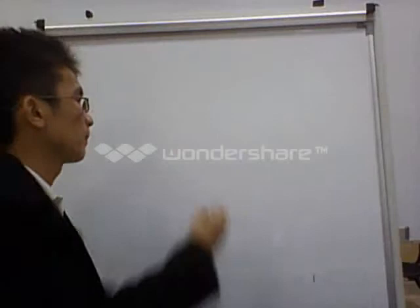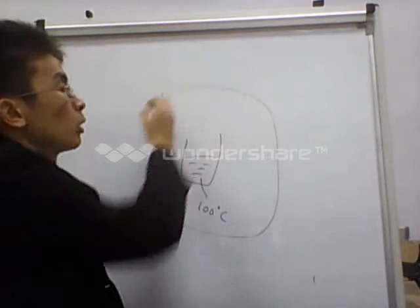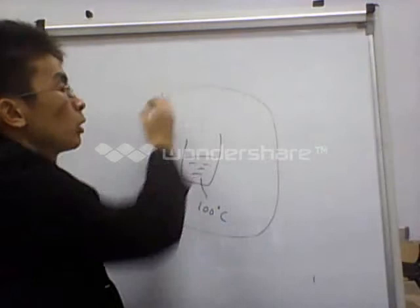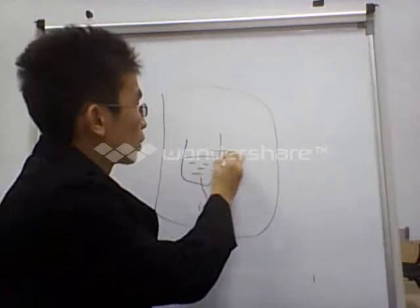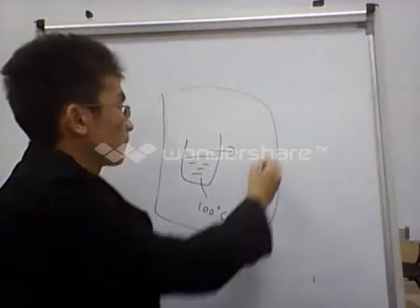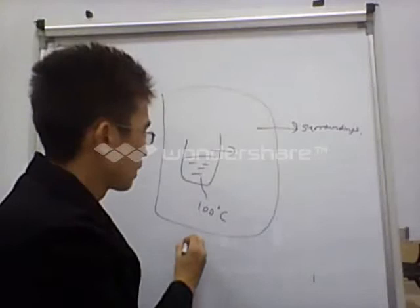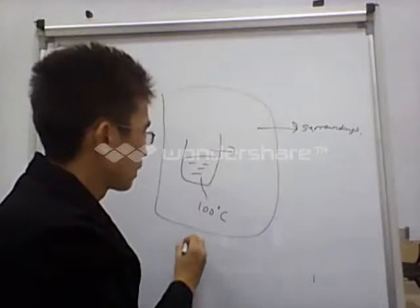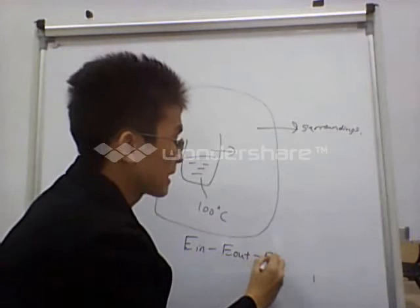Let me give you some examples to refresh your mind. You are given a hot coffee which is 100 degrees Celsius in a cooler room, and the energy lost by the hot coffee to the surrounding is actually equal to the energy absorbed by the surroundings. So the energy is conserved because E_in minus E_out equals E_system. So the first law of thermodynamics is valid in this case.